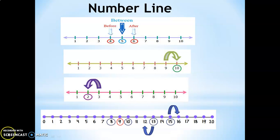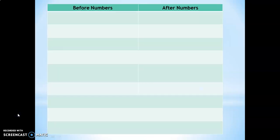Number lines are very useful in understanding the after numbers, before numbers, and between numbers concepts. Now, as the children are clear with numbers 1 to 100 in series, let us move on to testing the after numbers and before numbers concepts. You could use these questions in your classes, or if you are a parent, you could use them with your child to test their learning.